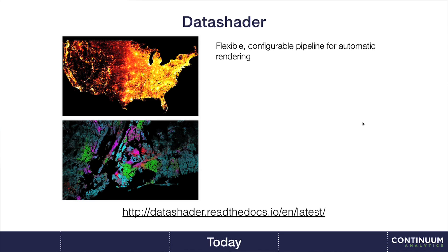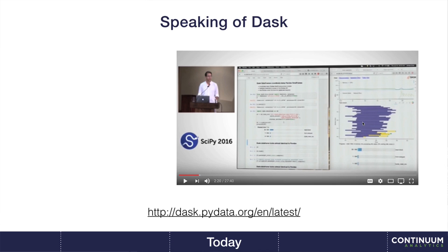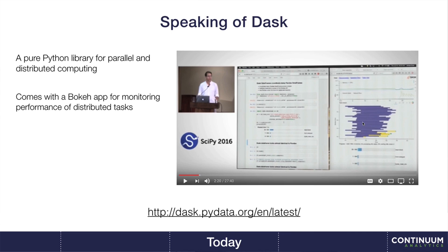DataShader uses Dask — another open source project that Continuum got started, with Matt Rockland as lead developer. It's a Python library for parallel distributed computing. If you're reaching for something like PySpark but want something more Pythonic, Dask might be a good choice — it keeps you in Pandas-like and NumPy-like expressions without a Java-like API shoehorned into Python. Matt has written a really amazing Bokeh application, one of the most sophisticated ones, for cluster monitoring of distributed tasks.